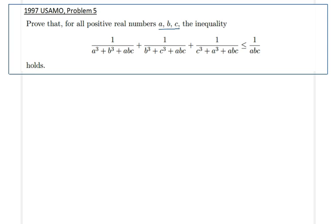Hello everyone, in this lecture we will be studying USAMO 1997 problem number 5. Here is a view of this problem. We would like to prove that for all positive real numbers ABC, the following inequality holds.